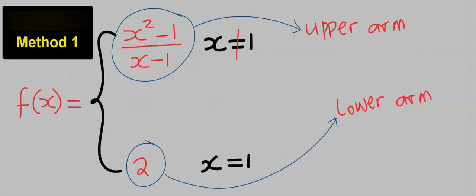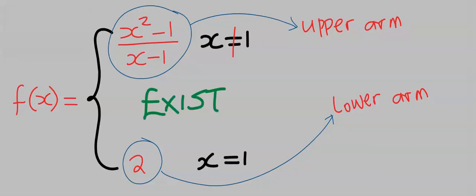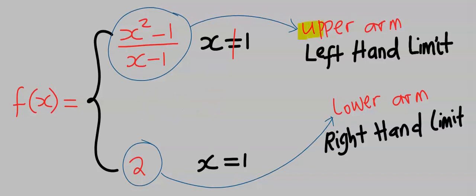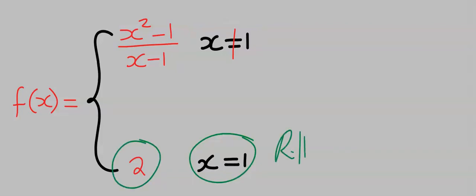If the upper arm and lower arm of this function are equal, then we say the limit function exists. The upper arm of the function is known as left-hand limit, while the lower arm of the function is known as right-hand limit. This is the condition guiding the upper arm, which is the left-hand side, and this is the condition guiding the lower arm, which is the right-hand side.